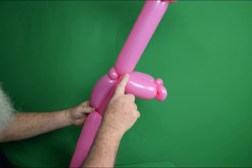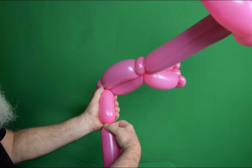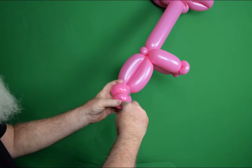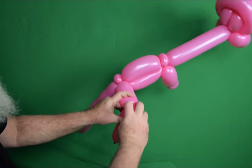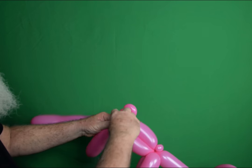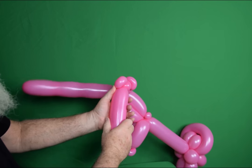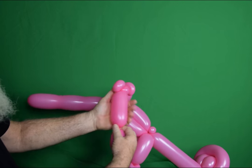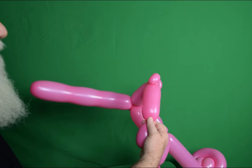And then we're going to make another assembly just like that. So you need a hand and a thumb. A pinch. A round bubble. Another pinch. Another hand and a thumb.